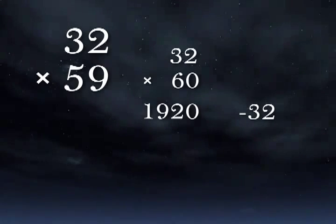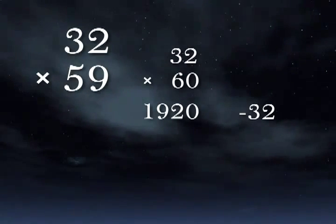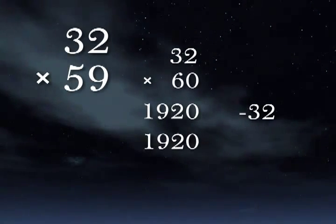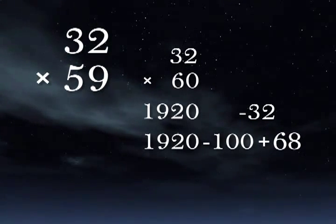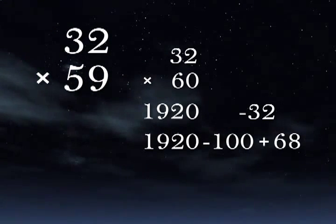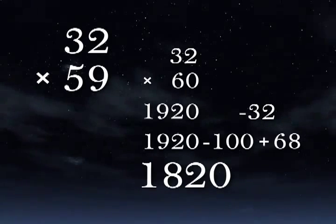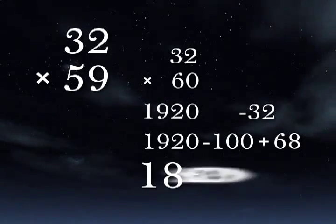Here we can use the over-subtraction and complement method. So 1920 minus 100 plus 68. 1920 minus 100 is 1820. Add 68. And you have 1888.